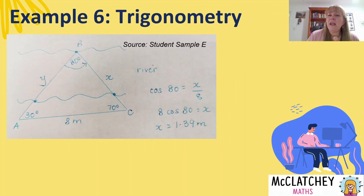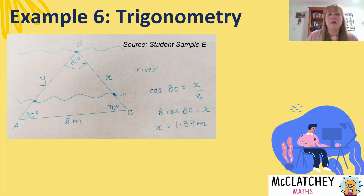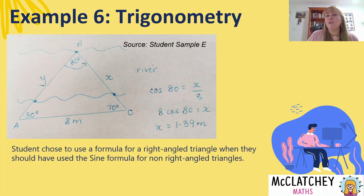Our last example is a trigonometry assignment where a student is trying to find the length across a river. They were given some information, did some calculations, and ended up with a triangle whose angles are 80 degrees, 30 degrees, and 70 degrees — meaning it's not a right-angled triangle. However, they applied the cosine rule for right-angled triangles instead of the sine rule for non-right-angled triangles, which is covered in year 10 extension. Unfortunately this student would be marked down to just application or even simplistic application of techniques, depending on the task.